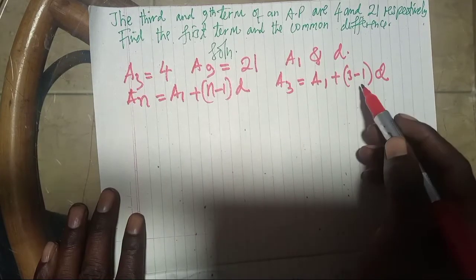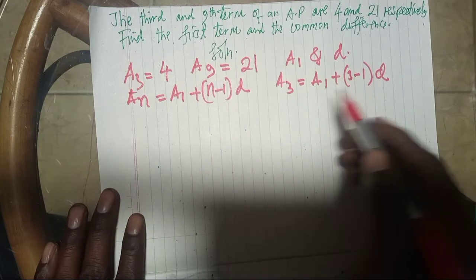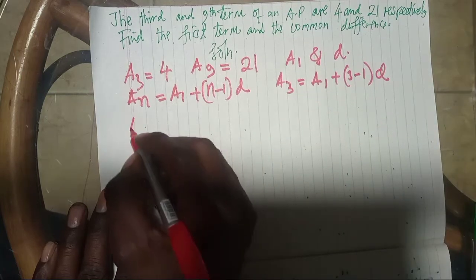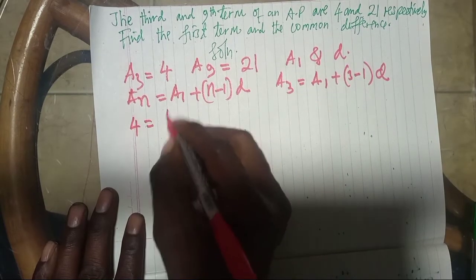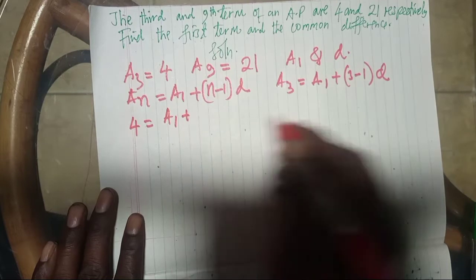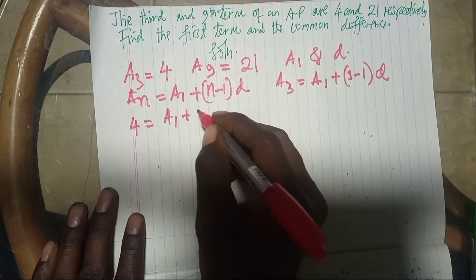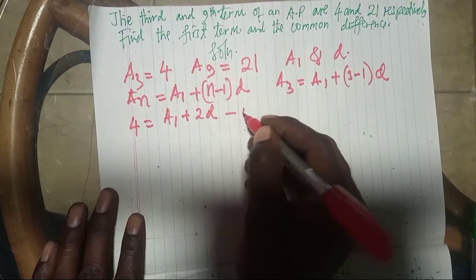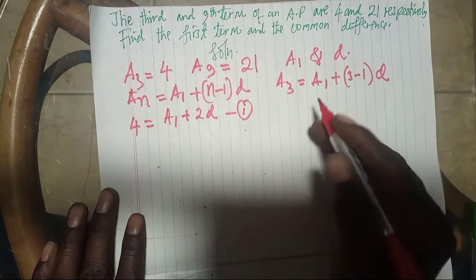N means the number of terms, here we are talking about 3 terms. Therefore, we know that A3 which is 4 equals A1 plus 3 minus 1, that is 2D. Now this is the first equation.